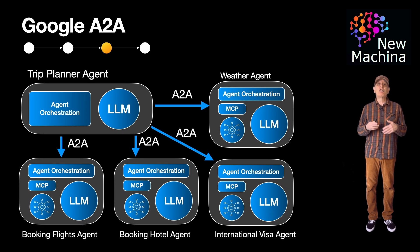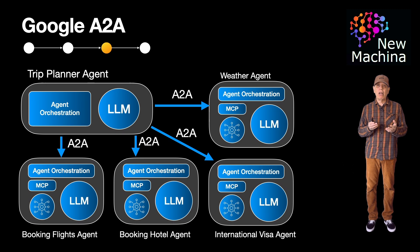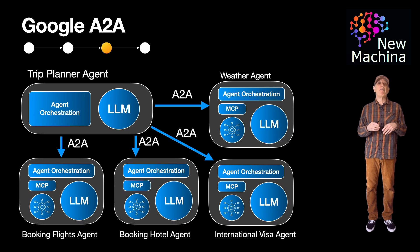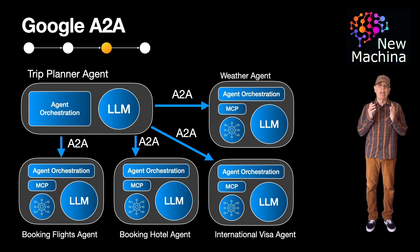So besides Google, who's supporting A to A? There are a number of Google partners that have publicly committed to this standard: Salesforce, Atlassian, Cohere, SAP, ServiceNow, and Langchain are a few of about 50 plus partners who have committed to adopting it. The test over time will be if we see more open source projects, startups, and major platforms starting to build agents that support A to A. Just like the web in the 90s needed standards like HTML and HTTP, agents need standards like A to A to get universal adoption.